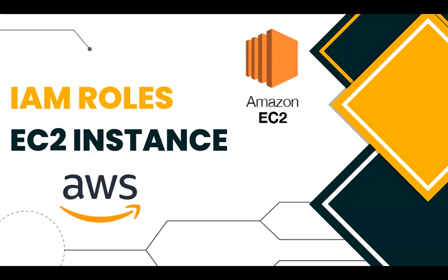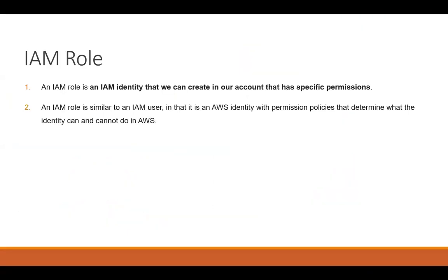Welcome to my channel. In today's video I'll be discussing how we can use IAM roles to launch our EC2 instance, how we can utilize these roles to grant permissions to a user, and how we can attach roles to the EC2 instance. A brief introduction: an IAM role is an IAM identity that we can create in our account with specific permissions. It's similar to an IAM user but it's an AWS identity with permission policies that define what that identity can or cannot do. We can assign that role to an EC2 instance and use both custom-defined policies and AWS managed policies.